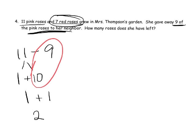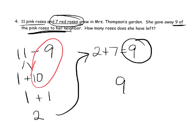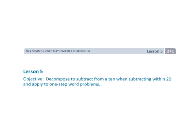But then it says we also have 7 red roses, so we're going to take the 2, add 7, that gives us 9. So how many roses does she have left over? The answer is 9 roses. And that is lesson 5.